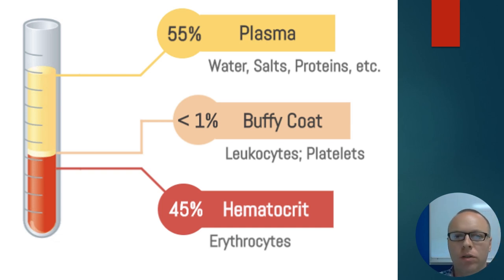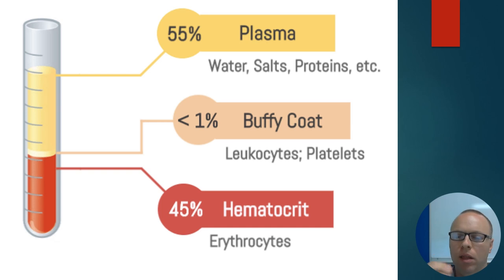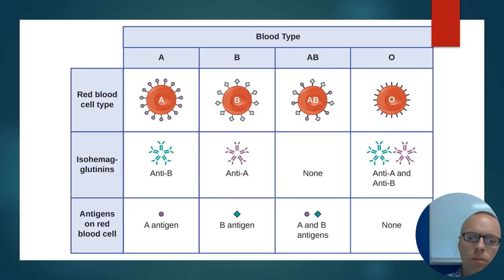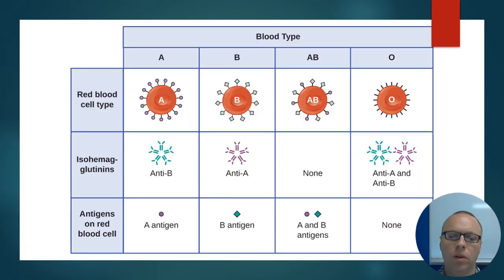Red blood cells are the cells that move oxygen from our lungs to our body, and move carbon dioxide from our body back to our lungs. So when you need a blood transfusion, unless otherwise specified, we're talking about our red blood cells. Sometimes we will donate plasma — I'll talk about that in a later video — so let's deal with our red blood cells.